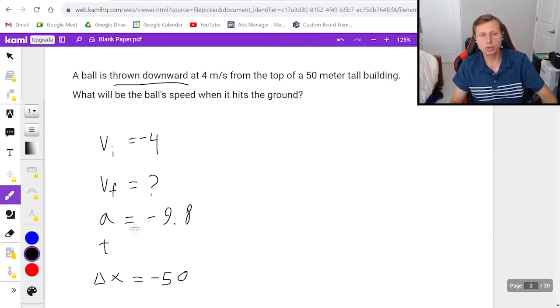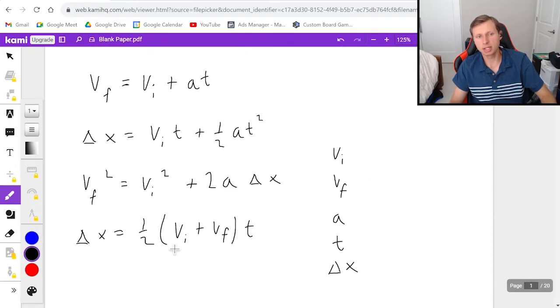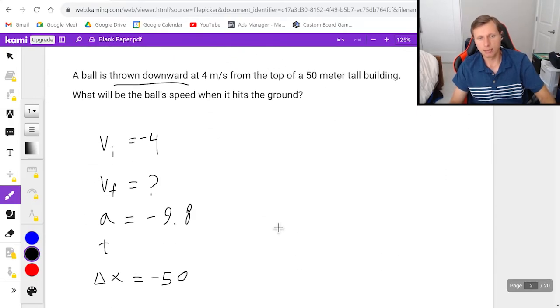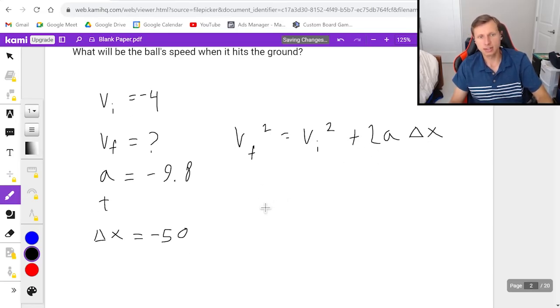And so now I need to use the equation that does not have time in it because I have three of the five variables and I don't have time. And that's going to be the third equation, the one with the squares. So I'm going to say v final squared equals v initial squared plus 2 a delta x. Now, v final is what I'm solving for. v initial is negative 4 squared plus 2 times negative 9.8 times negative 50.